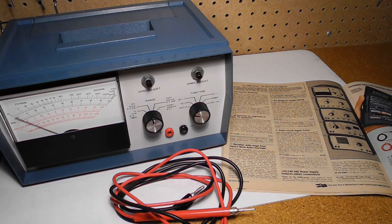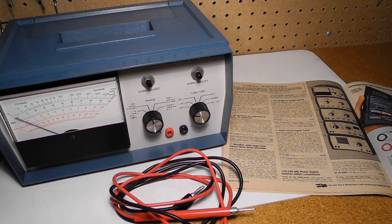The major drawbacks were a limited number of ranges, relatively low accuracy, harder to read than a digital multimeter, no AC current ranges, large size, and limited safety features, i.e. there's no fuses and the same jacks are used for voltage and current measurements.